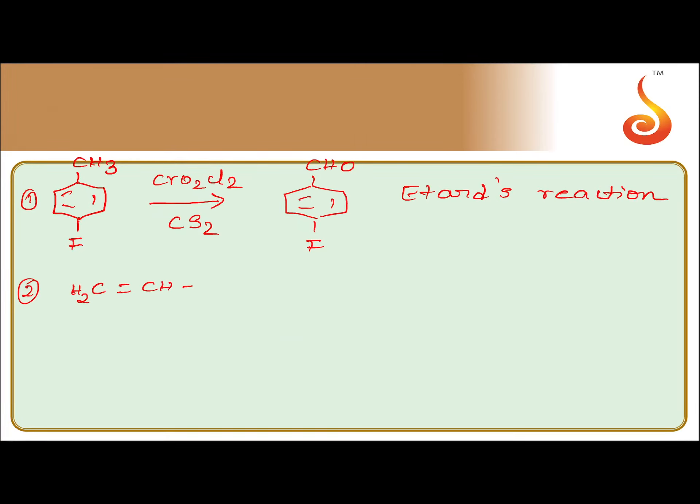CH2 double bond CH CH2 OH, this is sp3 hybridized carbon. This is allyl alcohol. Allyl alcohol can be converted, should be converted to propenal. What is the structure of propenal? CH2 double bond CH CHO.